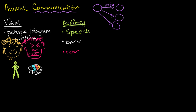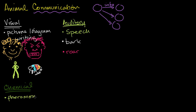Other forms of communication that might be less obvious include chemical communication. A lot of animals, including dogs, like to mark their territory with urine, and when other animals come by and smell it on a tree, it signals that this is another animal's territory. There are also pheromones — chemical signals. Even humans emit pheromones that are subconsciously sensed by other humans and can drive attraction between them.